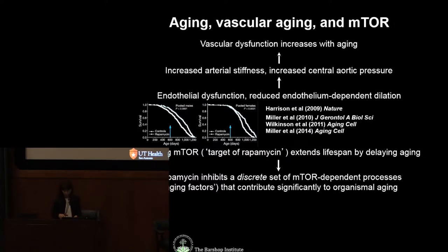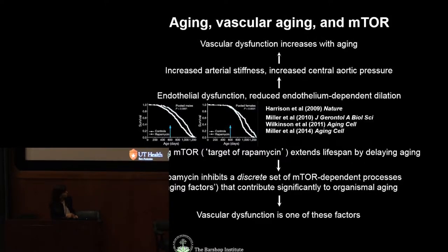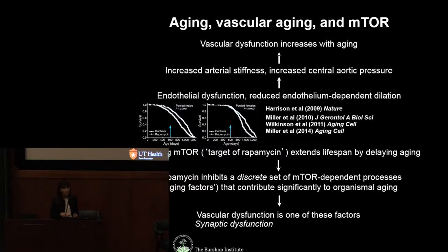We further propose that this is true for the brain, and we hypothesize on the basis of our data that vascular dysfunction — cerebrovascular dysfunction — is one of the TOR-dependent aging factors in the brain, as well as synaptic dysfunction. Today I will not show data on synaptic dysfunction; most of our recent data concerns cerebrovascular function.